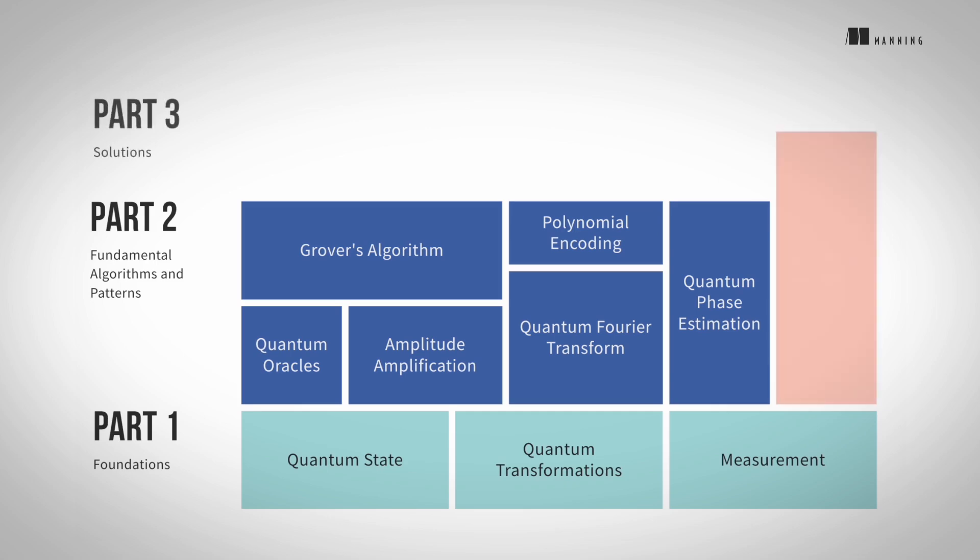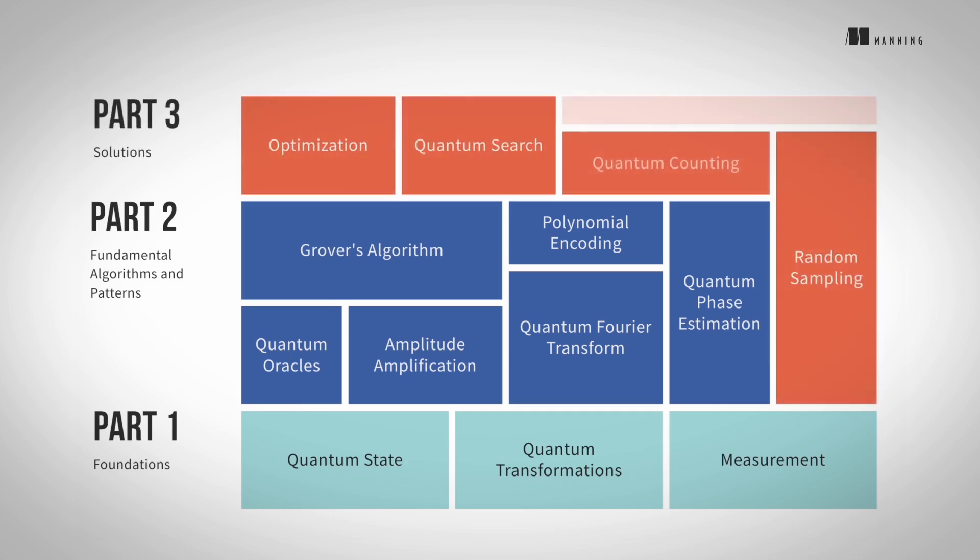Throughout all the chapters, we cover example applications including random sampling and optimization problems. We do not just repeat the common examples you find in other materials. We have several original applications in each chapter.